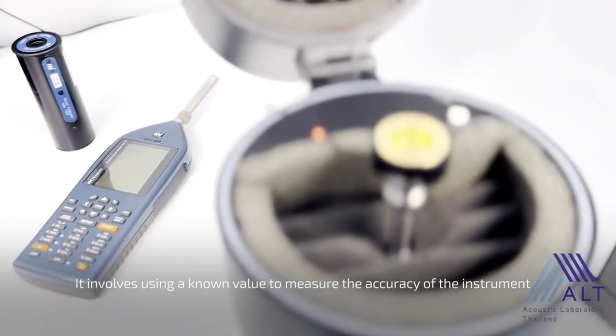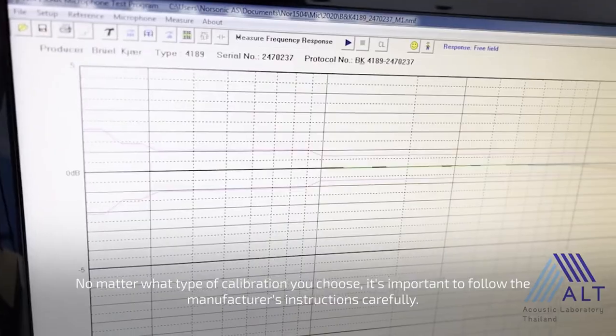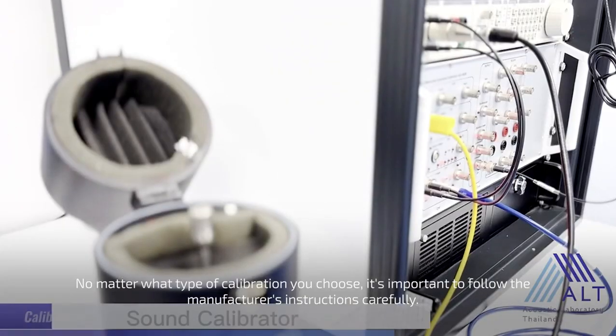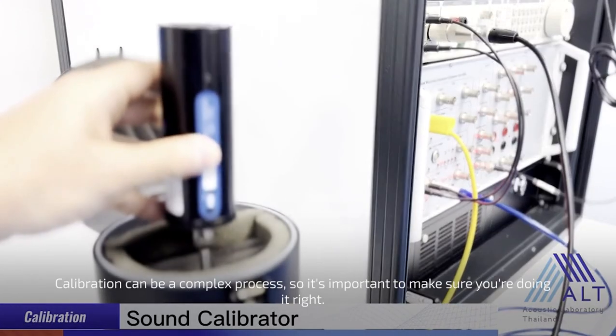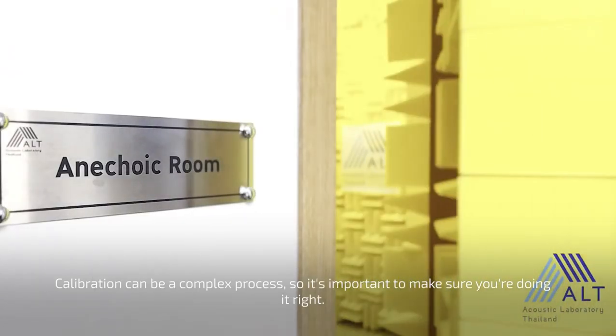It involves using a known value to measure the accuracy of the instrument. No matter what type of calibration you choose, it's important to follow the manufacturer's instructions carefully. Calibration can be a complex process, so it's important to make sure you're doing it right.